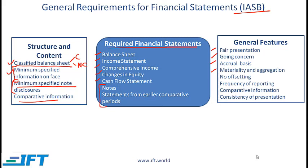Regarding frequency of reporting: financial statements must be prepared at least annually. Comparative information requires that financial statements include comparative data from the previous period — prior period amounts are disclosed for all amounts reported unless a specific requirement permits otherwise. Finally, consistency means the presentation and classification of items in financial statements are usually retained from one period to the next.